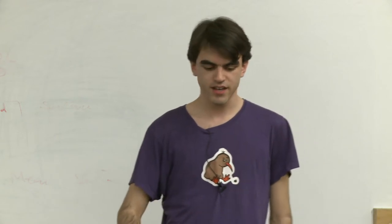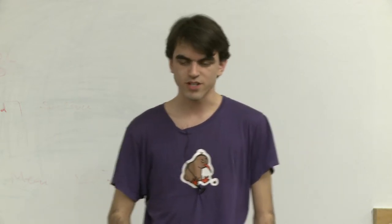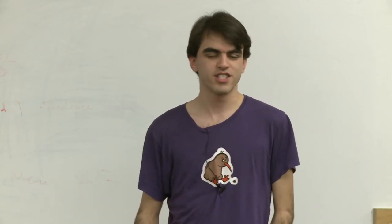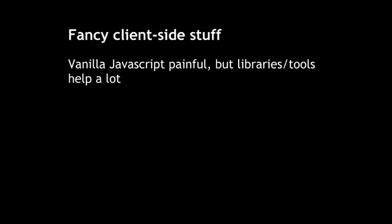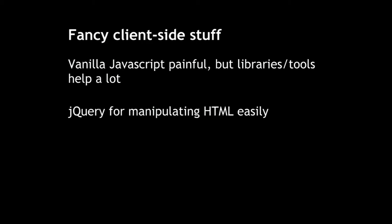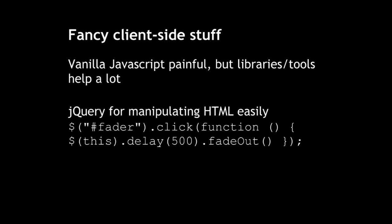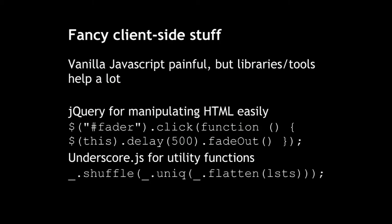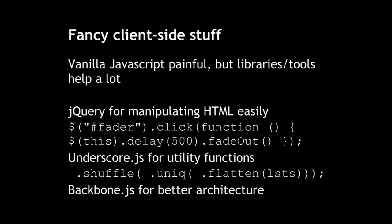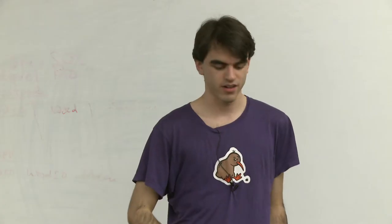There are also some libraries and tools that will help you a lot. Developing in plain JavaScript can be a little painful. You've probably heard about jQuery, which makes HTML rendering and manipulation a lot easier — it has functions for fading in and out and doing animations. There's also a library called Underscore.js that has useful utility functions: things like shuffling an array, removing duplicates from a list, or flattening a list of lists. And there's one more library I'd like to spend time on called Backbone.js, which really helps you deal with models on the client side.